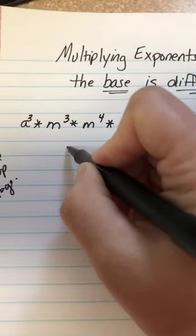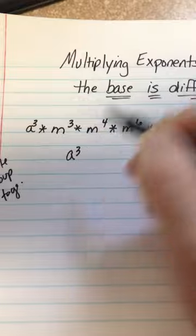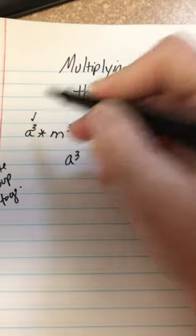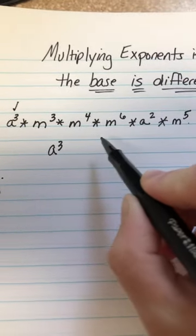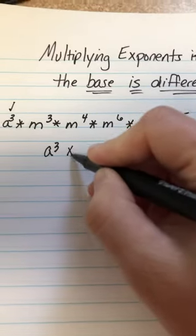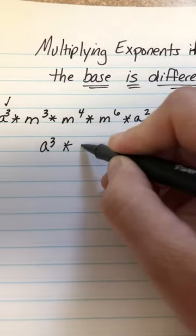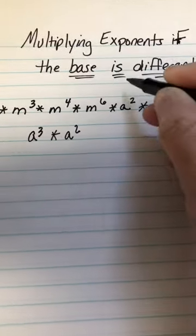So I'm going to put all my a's first. I have a to the third. We'll put a little check mark because I've got it marked off and that keeps track. Times a squared. Okay, put a little check mark.